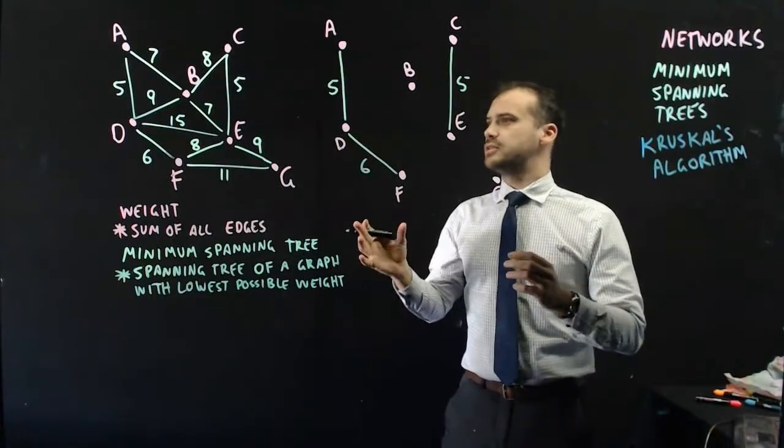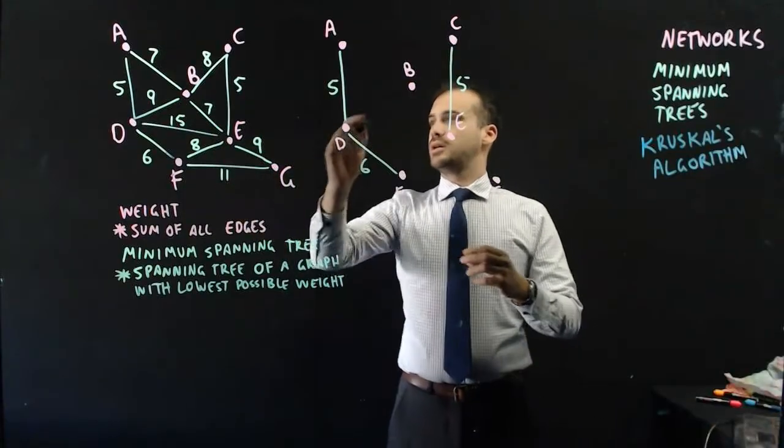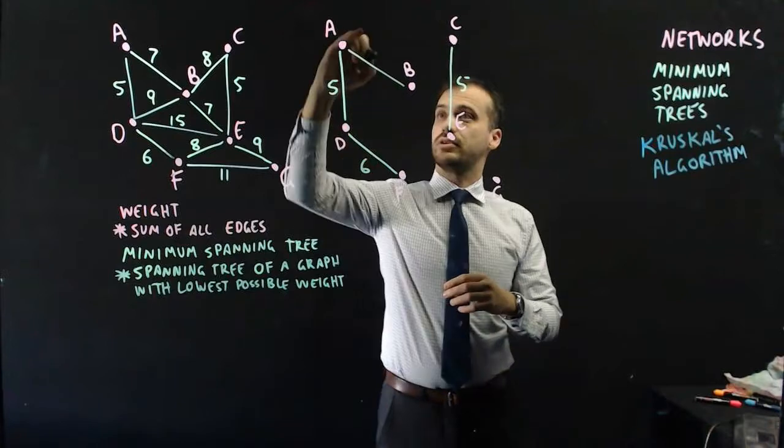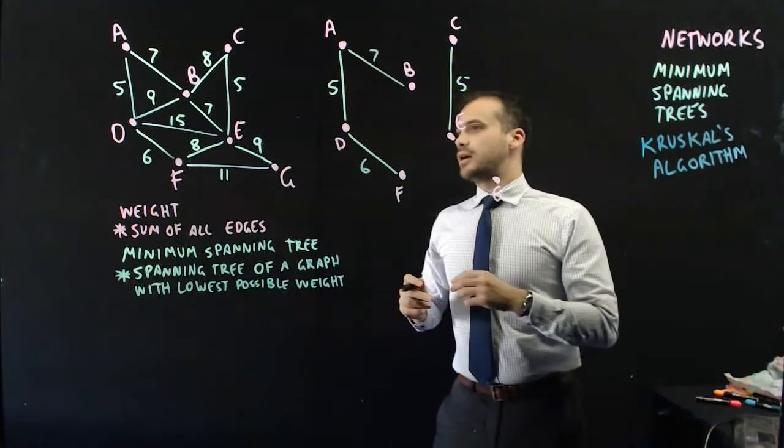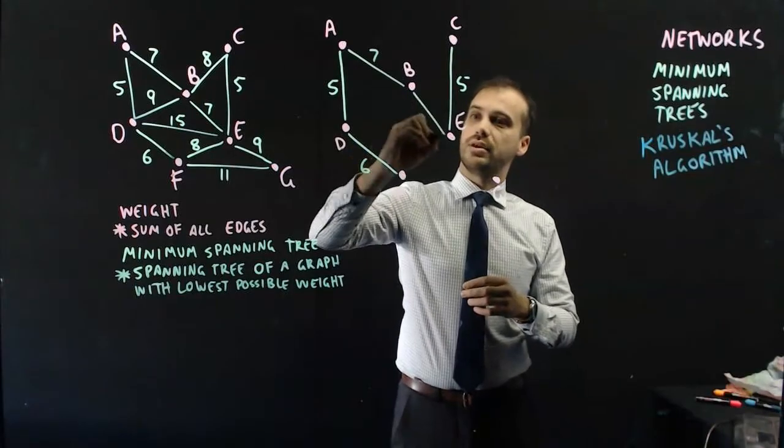Okay, a 7. Alright, there's two 7s here. I'm going to pick one at random, because it doesn't matter which one I choose, and that's A to B. Great. 7. Now, there's another 7 there, so I'm going to use that one as well. 7 there.